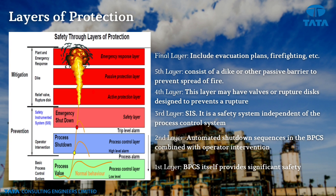The first and lowest layer is the basic process control system, which is our DCS and PLC system. Another layer is the process shutdown, again handled by DCS and PLC. The third layer is called the emergency shutdown layer, and it is here that the SIL study is carried out.